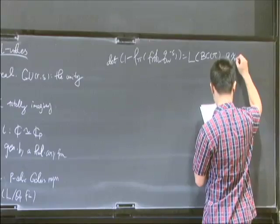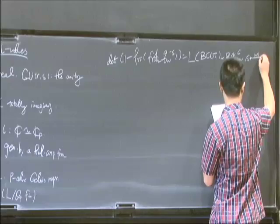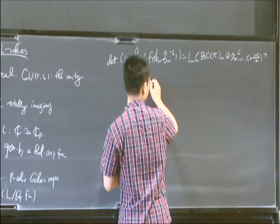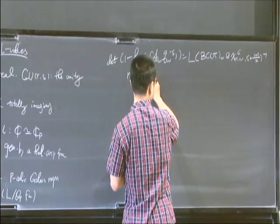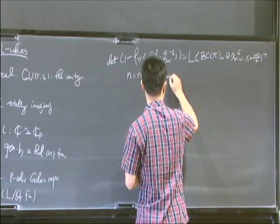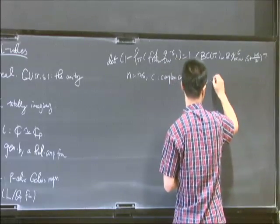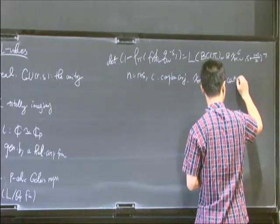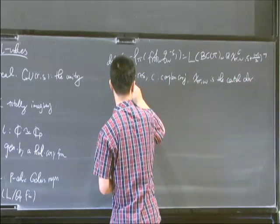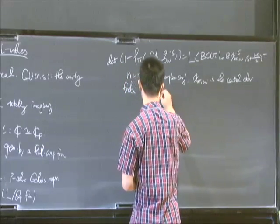The determinant of the Frobenius equals the L-factor of the base change of π to GL_{R+S}, tensor with C^{S+1-N/2-1}. Here N is R plus S, and C is complex conjugation. Chi is the central character of π.